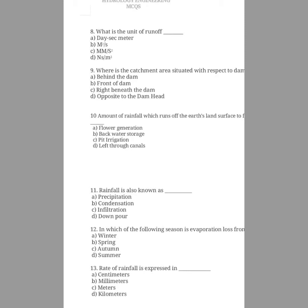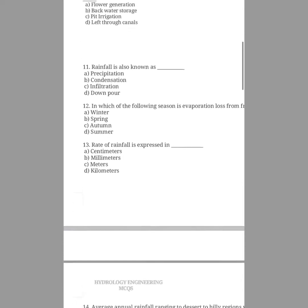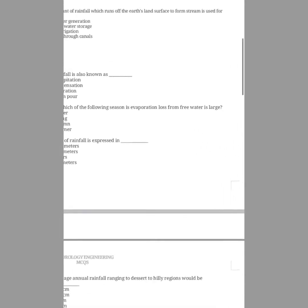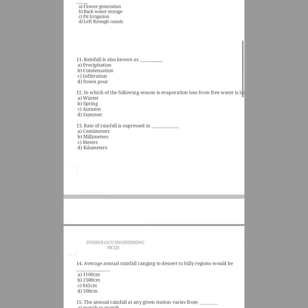Question number twelve: in which of the following seasons is evaporation loss from free water surfaces largest? The options are winter, spring, autumn, summer. The answer is option D, summer, because during summer the evaporation loss from the free water surface is considerably large. The evaporated water finds room in the air mass, and the water-holding capacity of air in the form of vapour is also very large in hot weather.